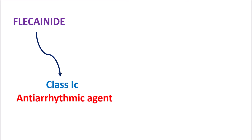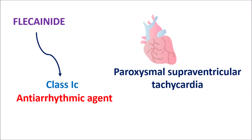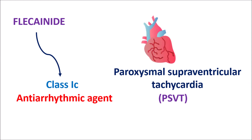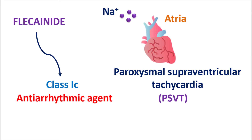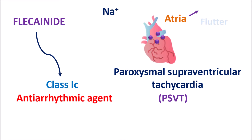This drug is particularly indicated in the treatment of paroxysmal supraventricular tachycardia, commonly known as PSVT. This is a condition where irregular heartbeats are observed; the term paroxysmal indicates sudden onset. Supraventricular means they are generated above the ventricles. These impulses can be generated from the atria where excessive firing of sodium channels may lead to irregular heartbeats, causing loss of coordination which may lead to atrial flutter or, in severe conditions, atrial fibrillation.